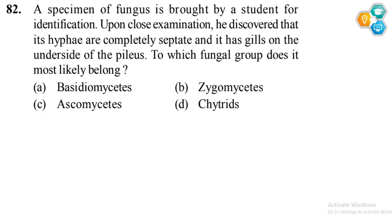So the question has given us all these features. Our key point is: completely septate hyphae — from this alone, the remaining three categories are still possible. It could be Deuteromycetes, Zygomycetes, Ascomycetes, or Basidiomycetes classes as well.